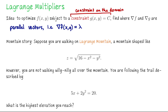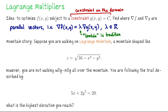In other words, the gradient of f equals lambda times the gradient of g, where lambda is just some scalar. Lambda is the traditional Greek letter used here. To explore the idea of a constraint, suppose we are walking on a mountain perfectly shaped like z equals the square root of 16 minus x squared minus y squared — that's an upper hemisphere — and I'm following a trail described by 5x plus 2y squared equals 20.